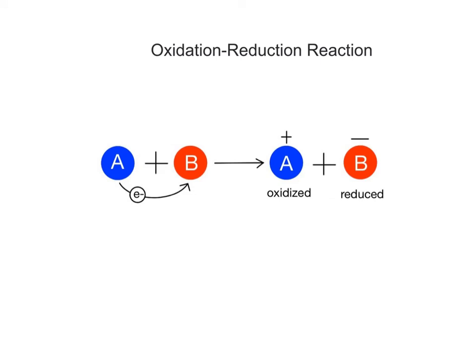A general equation for a basic oxidation-reduction reaction is: chemical A loses an electron and chemical B gains the electron, yielding the oxidized form of chemical A, now with a positive charge, and the reduced form of chemical B, now with a negative charge. It's similar to two people playing catch: the thrower of the ball, which represents the electron, is the donor, and the catcher is the recipient. The thrower loses the ball and is oxidized, while the catcher receives the ball and becomes reduced. Oxidation-reduction reactions always occur in pairs, where one substance is oxidized at the same time the other substance is reduced.